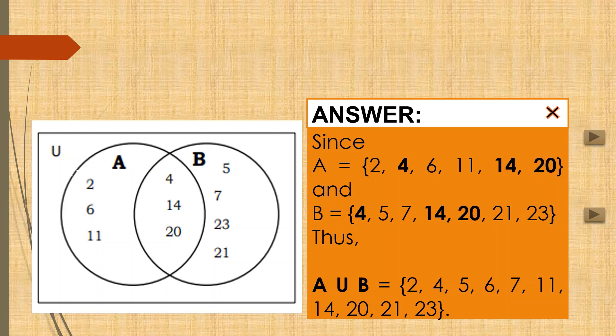Let us now answer the question. Since A have elements 2, 4, 6, 11, 14, and 20. And set B have elements 4, 5, 7, 14, 20, and 21.